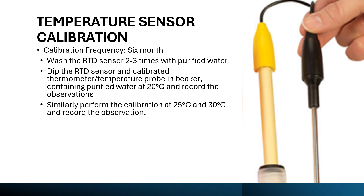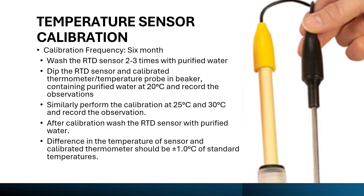Similarly, perform the calibration at 25 degrees C and 30 degrees C and record the observations. After calibration, wash the RTD sensor with purified water. The acceptance criteria is that the difference in temperature between the sensor and the calibrated thermometer should be plus or minus 1.0 degree C of the standard temperature. Calculate the difference between the sensor temperature and the calibrated thermometer temperature — it should be within plus or minus 1.0 degree C.